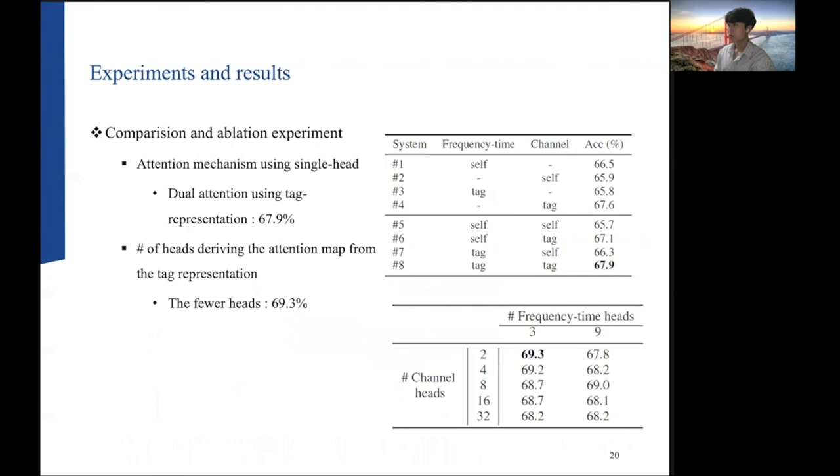These are the results of comparison experiments. The upper table compares single and dual attention technique using single head. Comparing System 1 through 4 and 5 through 8, dual attention technique shows better performance than single attention technique. Comparing System 5 through 8, the application of attention map derived from the tag representation shows better performance than the self-attention method.